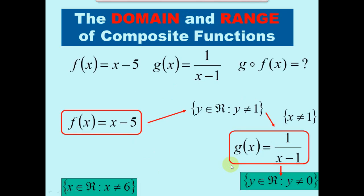Let's do this example. We're finding g of f of x, meaning we take the f of x function and put it into the g of x function and figure out the domain and range. When we look at g of x, x cannot equal 1 because that gives 1 over 0 since 1 minus 1 is 0. So going backwards — this cannot be 1. What x would make the f function equal 1? If x was 6, then 6 minus 5 is 1, so x cannot equal 6.